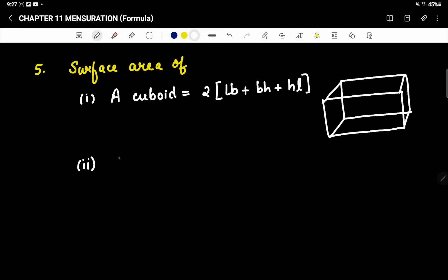Next is surface area of a cylinder. Cylinder is 2πr(r + h). Cylinder, we all know, cylinder is like this. Now let us talk about the volume.